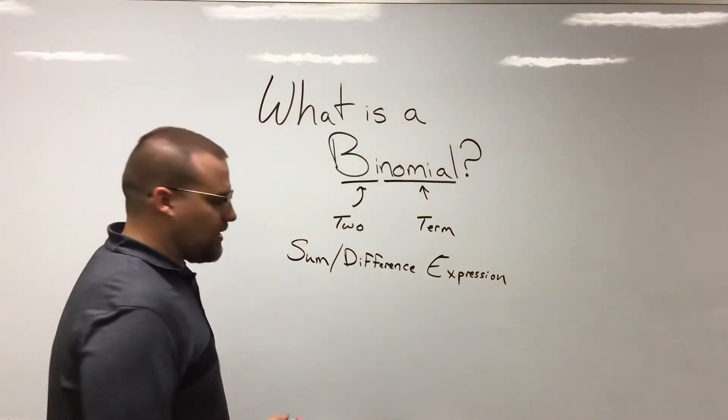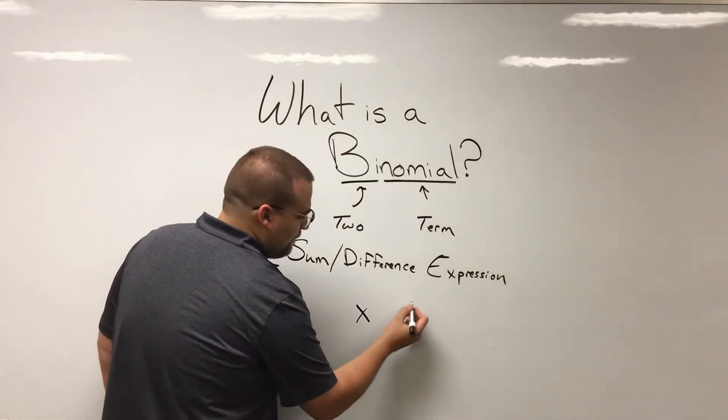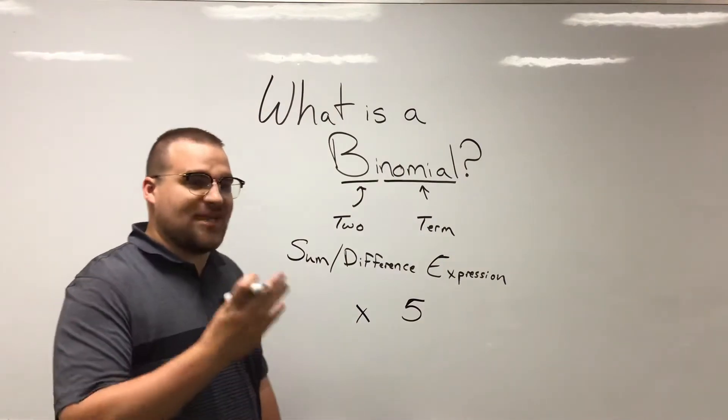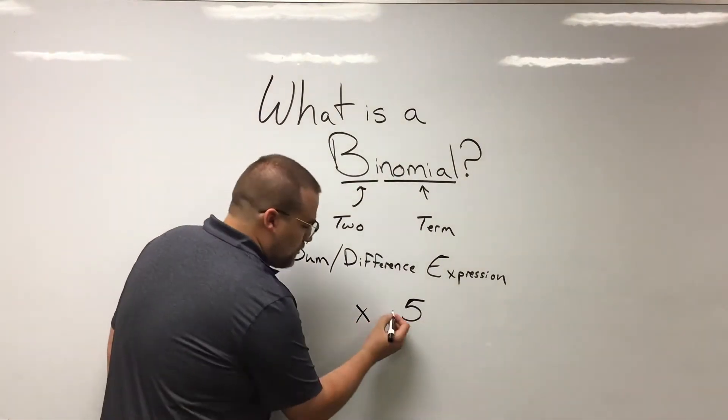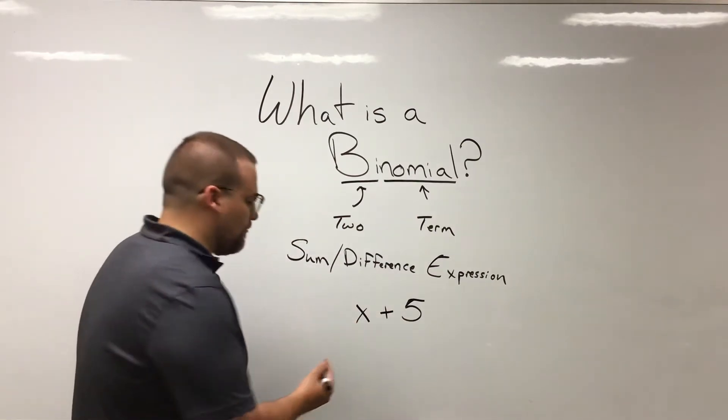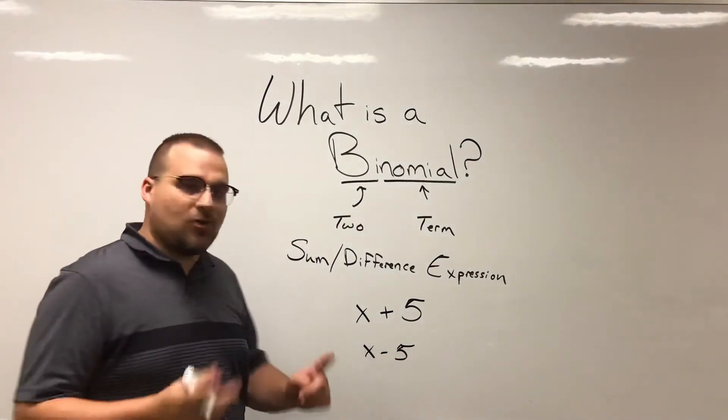So let's just say, for example, x and 5. Now it says that a binomial must be a sum or difference expression. So we could write x plus 5. That's a binomial. Or we could write x minus 5. That's also a binomial.